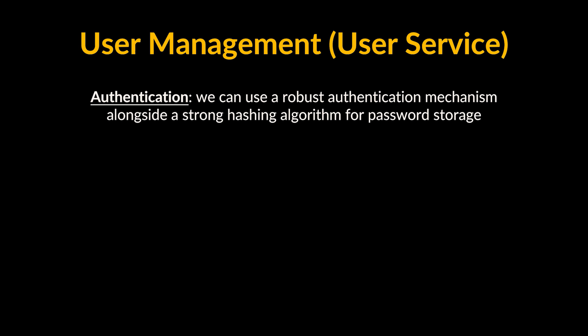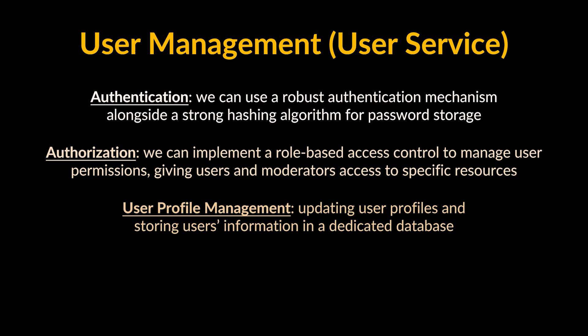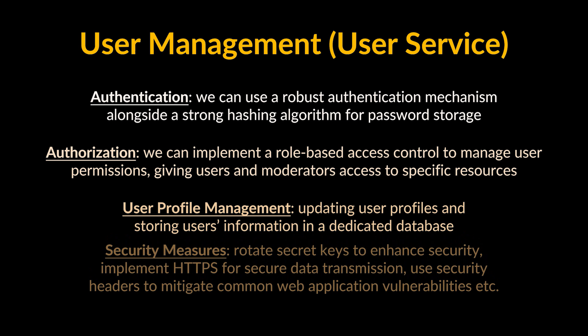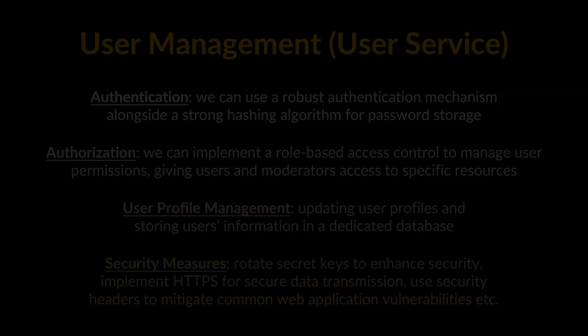Concerning the user service, the main functionalities handled here include: authentication — using a robust mechanism such as JSON Web Tokens (JWT) alongside a strong hashing algorithm for password storage; authorization — implementing role-based access control to manage user permissions, giving users and moderators access to specific resources based on their role; and user profile management — updating user profiles and storing user information in a dedicated database. Additional security measures include regularly rotating JWT secret keys, implementing HTTPS for secure data transmission, and using security headers to mitigate common web application vulnerabilities.